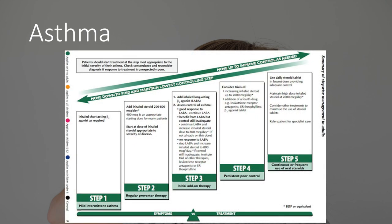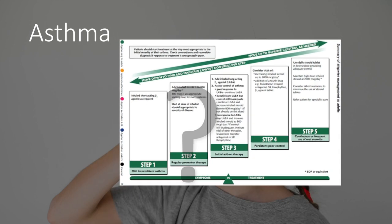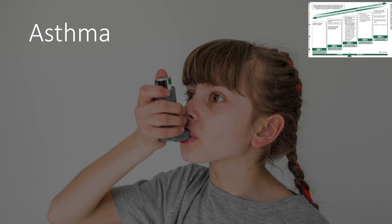The asthma treatment pathway is a stepwise progression. Step one is a SABA — salbutamol — a short-acting beta agonist used acutely to open up the airways and bronchioles. This is the inhaler most commonly used by asthmatics when having difficulty, and it provides immediate relief.